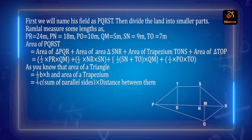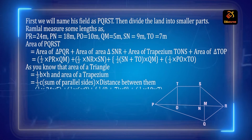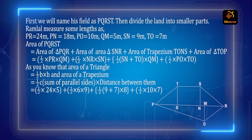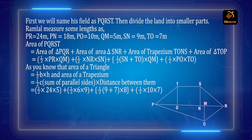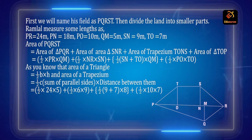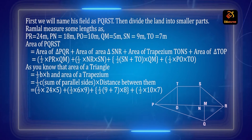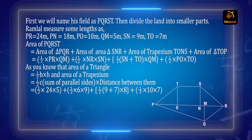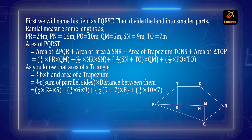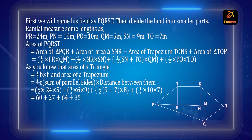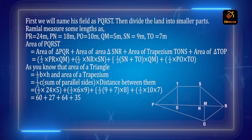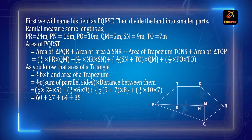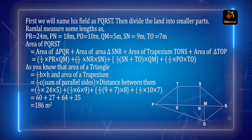So let us put the values: = (1/2 × 24 × 5) + (1/2 × 6 × 9) + (1/2 × (9 + 7) × 8) + (1/2 × 10 × 7). On calculation we get 60 + 27 + 64 + 35 = 186 m².